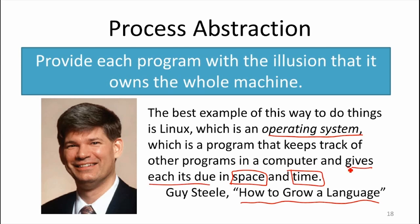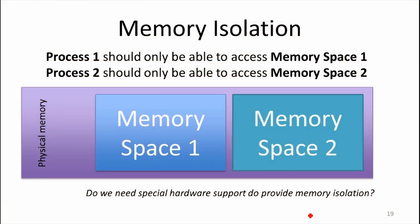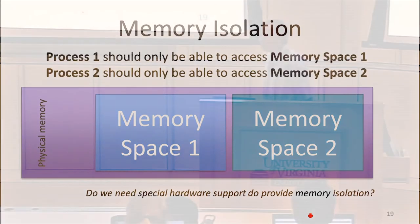So far we've mostly talked about time — using preemptive scheduling to give each process a fair share. What he means by space is memory. Each program should have the illusion that it owns memory independently from other programs. That's what we're going to talk about today. Our goal is to have some large physical memory, run multiple processes in it, and give each process its own memory space that it cannot access from other processes.